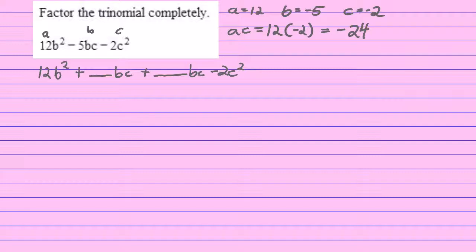It'll be, let's see: 1 times negative 24, 2 times negative 12, 3 times negative 8, 4 times negative 6, and then they start repeating at 6.